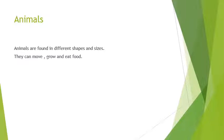Now let us start our chapter. Animals. Animals are found in different shapes and sizes. Some animals are small, some are tall, some are big, some are fat, some are thin. So there are different types of animals with different shapes and different sizes. They can move, grow, and eat food. They are living things like us.